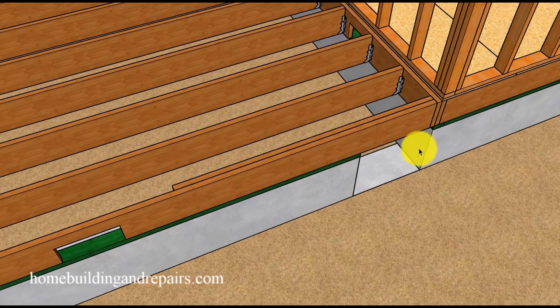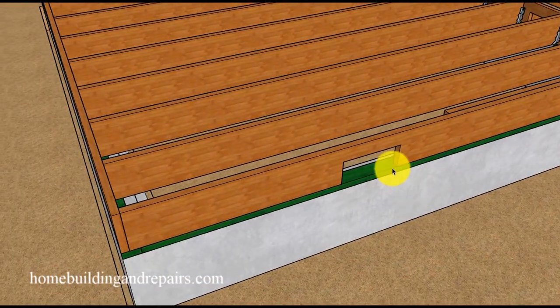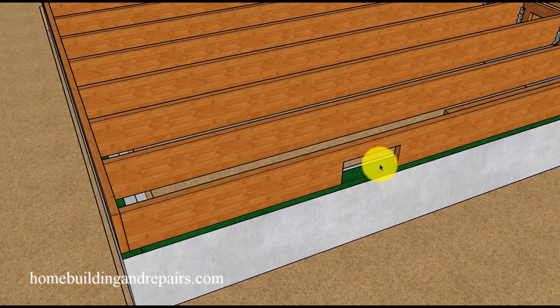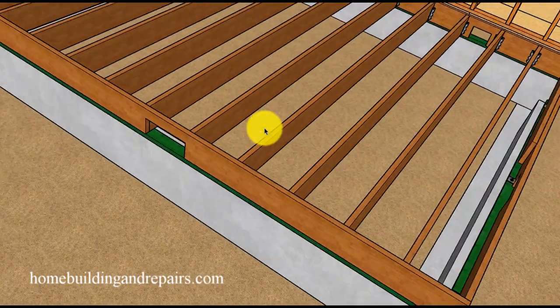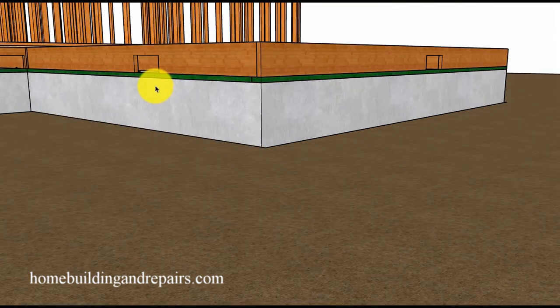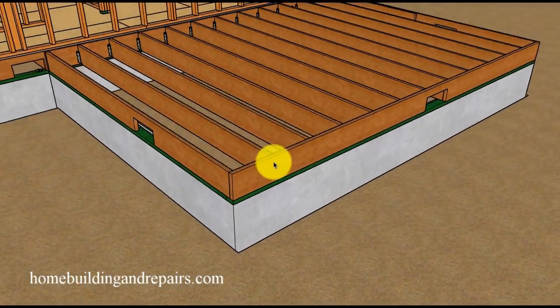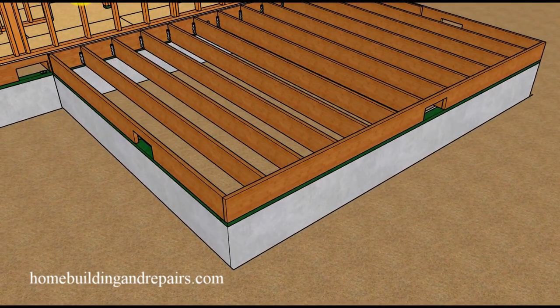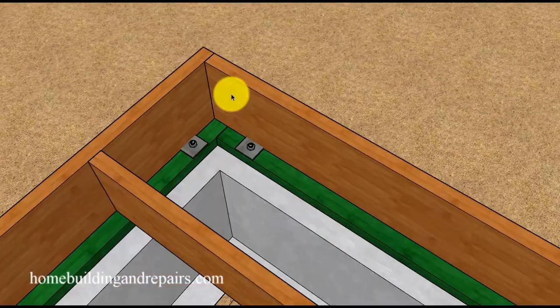We have our new crawl space vents. Even though I have three in this example you might need to install more or less. Not too difficult to install the joist here. The joists are going to be 16 inches on center.